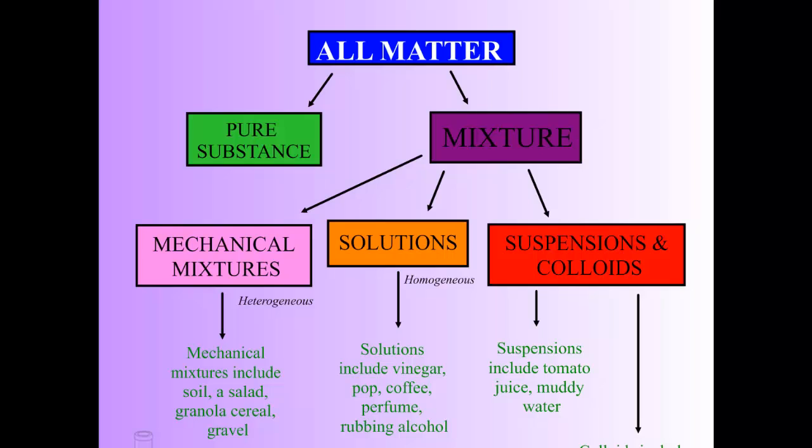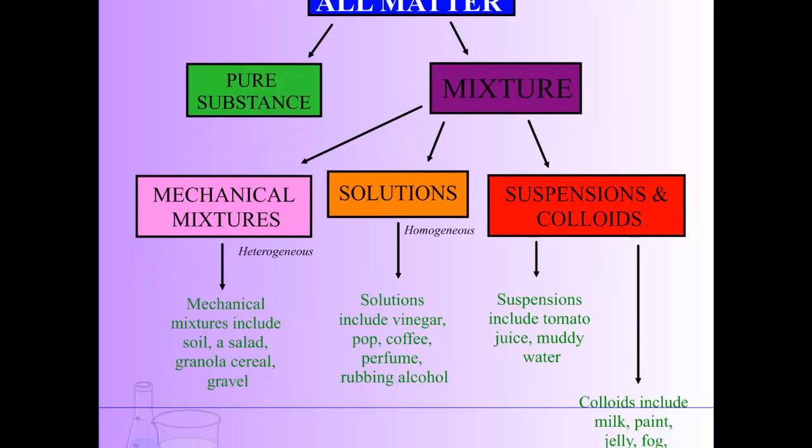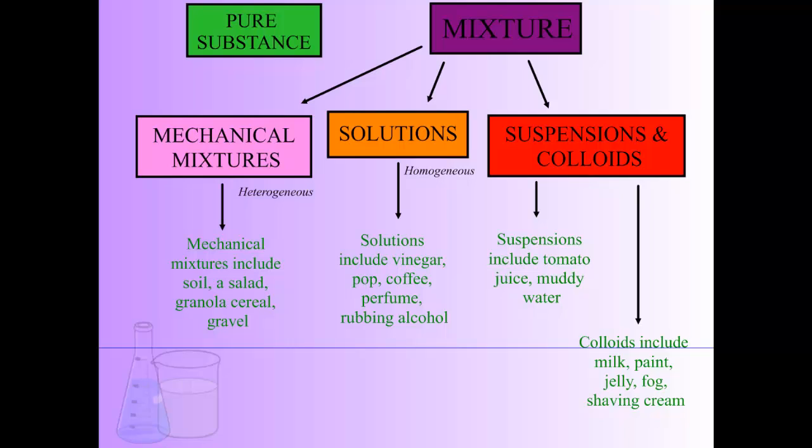So we can look at our all-matter flowchart now. We have pure substance standing on its own, and then we have mixtures — separated into mechanical mixtures, solutions, and colloids and suspensions, with examples for each. That is the division of matter in a nutshell. Hopefully that makes sense, and if it does not, by all means come back and ask in class.